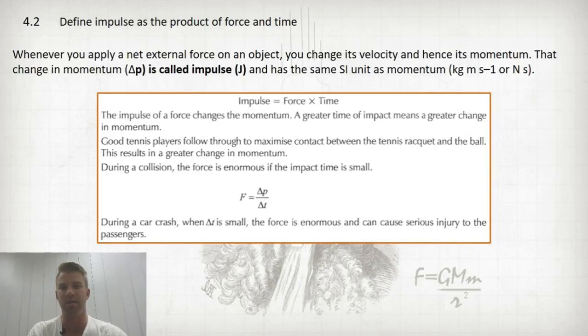Section 4.2: We define impulse as the product of force and time. Similar to the previous slide 4.1 about momentum, we now look at impulse. Whenever you apply a net external force on an object, you change its velocity, hence its momentum. That change in momentum is called impulse.